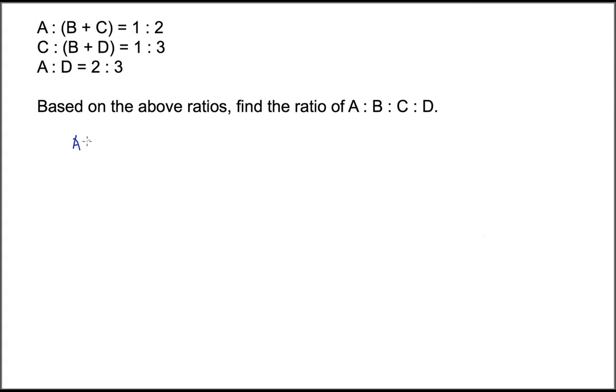A is to B plus C is 1 is to 2. Now we want to put D in. So we need to make A into 2 units. Here A is 1 unit. We need to make it into 2. So we need times 2 in order to put D in. Once we times 2, we will have 2 times 2 is 4. Then D, we will have 3.